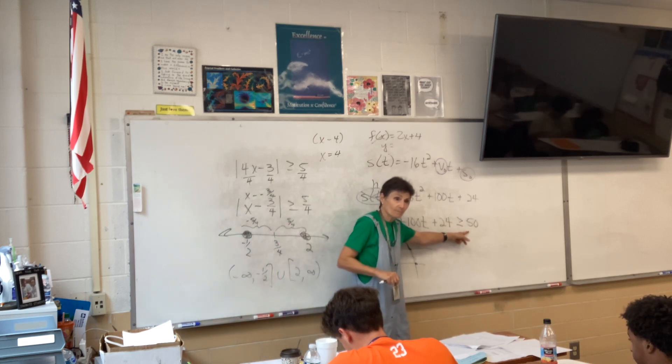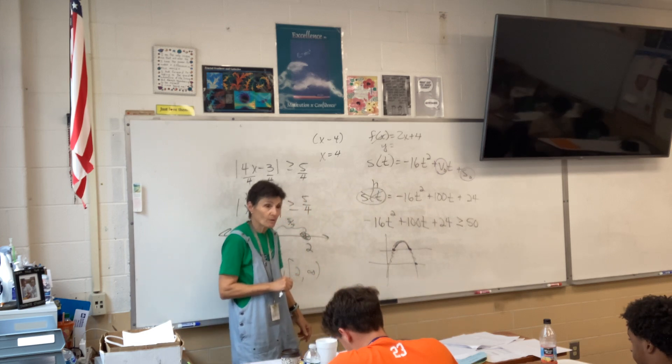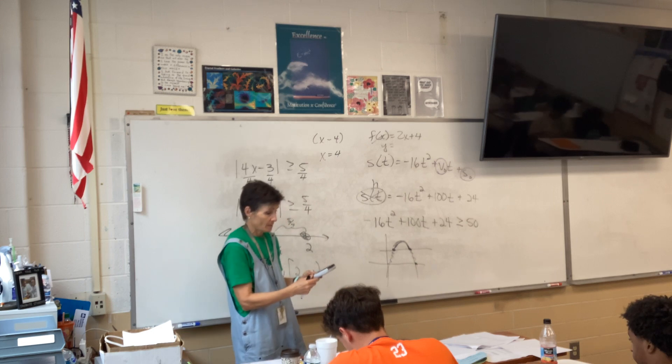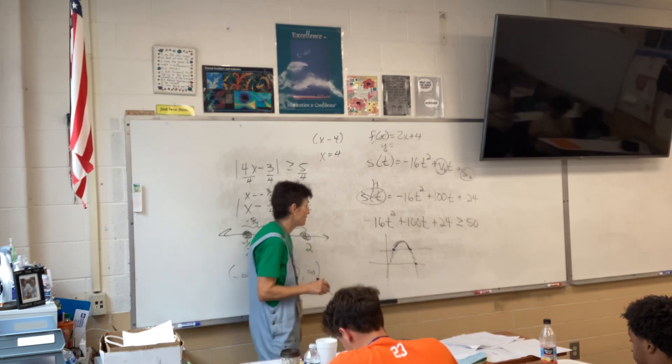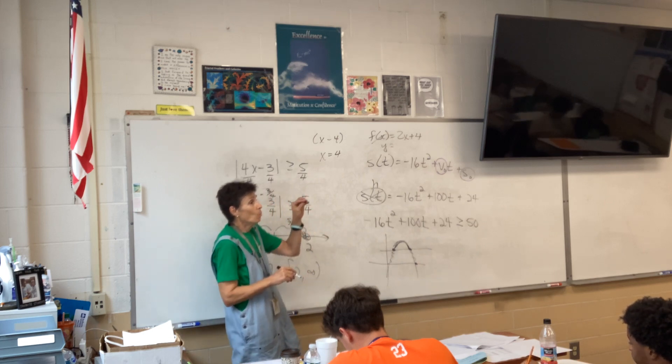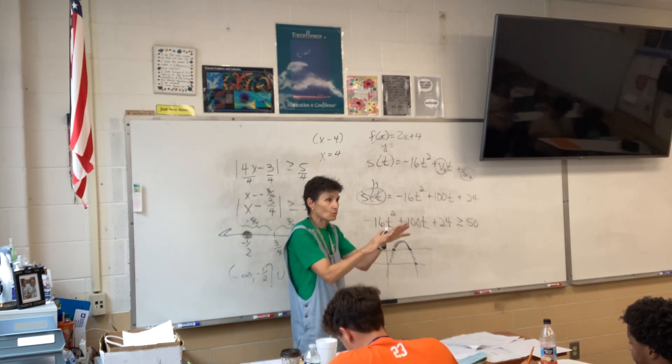Because from zero to whatever this point is, from zero to here and from here to here, would be when it's less than 50. So, you would need that. We're going to find it anyway in the second part. But you would need it on the first part if it were less than. Then, how do you see where they are set?